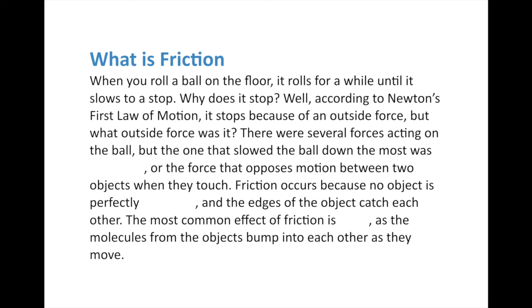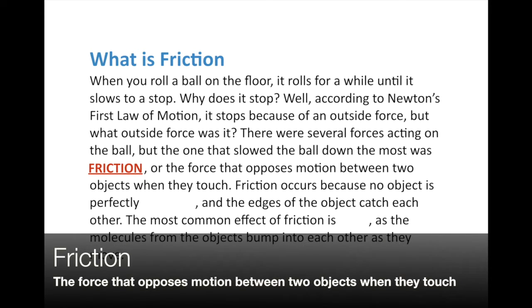When you roll a ball on the floor, it keeps rolling and eventually comes to a stop. According to Newton's first law, an outside force acts upon it — but what outside force? We'll boil it down to a simple framework: friction. Friction is the force that opposes motion between two objects when they touch. The classic example is rubbing your hands together quickly — when they're rubbing and touching, friction is happening.